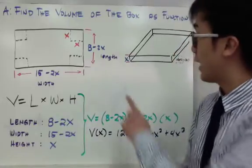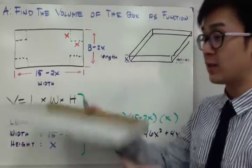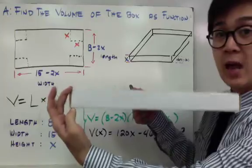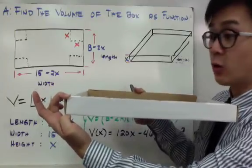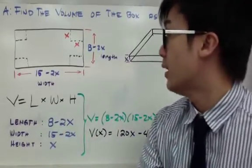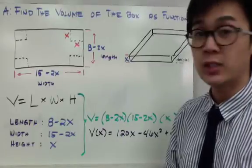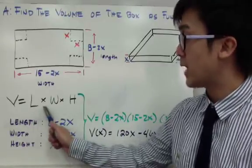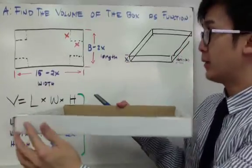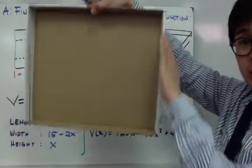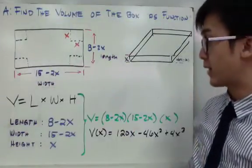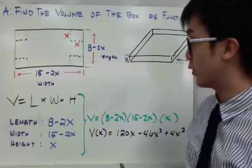For the height: when you fold the cardboard up, the cut corner becomes the height of the box, and it is measured by x in our word problem. So x is the height. Putting them all together, the volume — length times width times height — will be (8 minus 2x) times (15 minus 2x) times x. This is the equation for the volume of your open topped box.